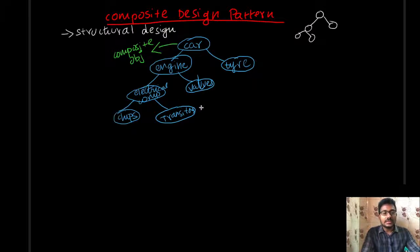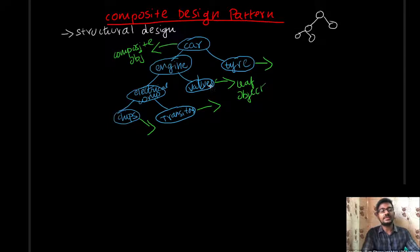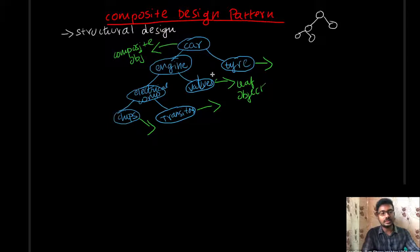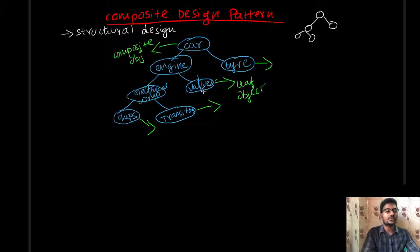The composite object definition is: there is an object with n number of child objects. So this car is a composite object, and the tire is also a composite object. The transistors, valves, tires, and chips are leaf objects. A leaf object is a child — it is an end object with no further children. A composite object can contain both composite objects and leaf objects.